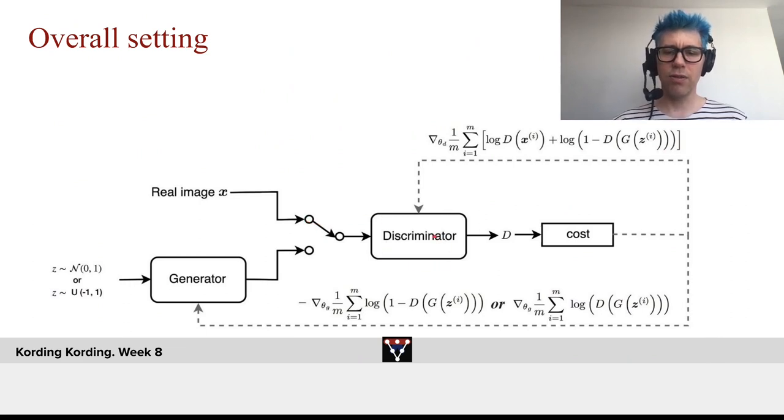It goes to the discriminator, produces a cost. That cost is seen by the generator and being used to improve that generator. So now we have this setting and we will use in that setting the learning for both of them according to the relevant gradients.